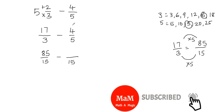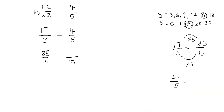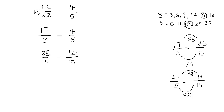Now I'm going to repeat the same process with the second fraction. This fraction is 4 fifths and I want the denominator to be 15. To get from 5 to 15 I multiply the denominator by 3, and I also multiply the numerator by 3 to keep the fraction balanced. 4 times 3 is 12. These two are equivalent fractions, so I can replace 4 fifths with 12 over 15. Now notice that I have the same denominators.